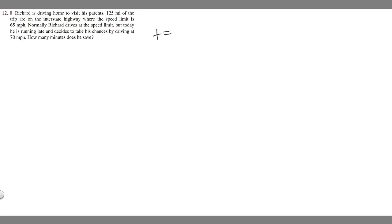So t equals d over v and so what we want to do is we're given the distance right, 125 miles, but the velocities we're going to calculate two different scenarios. One scenario where he goes 65 miles per hour and one scenario where he goes 70. So let's calculate each scenario.